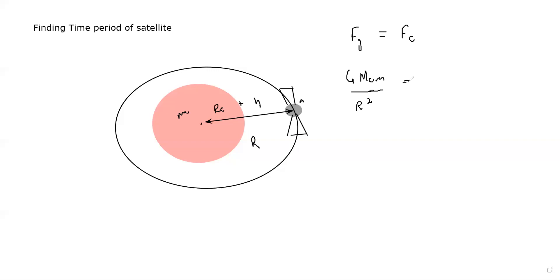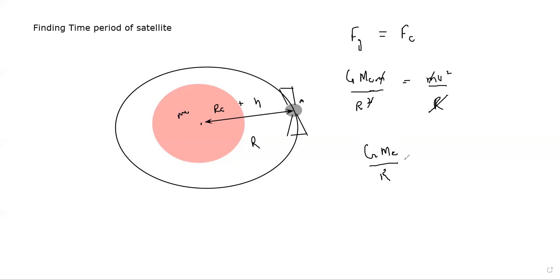We can substitute here: the centripetal force is mv²/r, and r is the total distance. So r² and r cancel out with each other, and m cancels with m. What we have is: G equals mass of Earth divided by radius, and v squared.